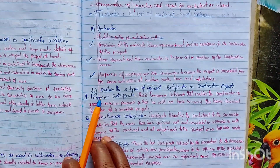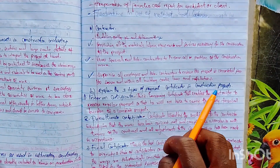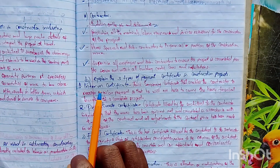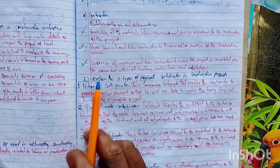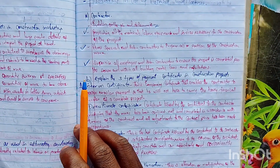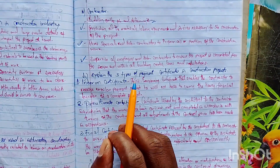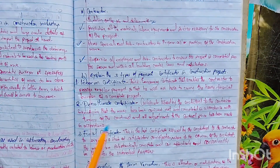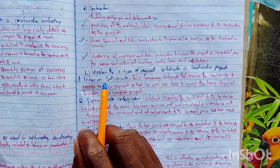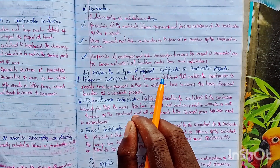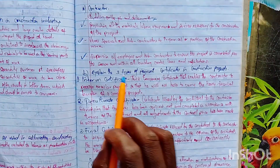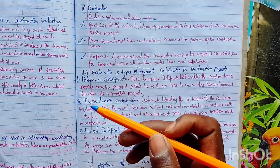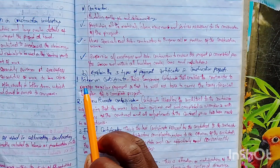Question four B says: explain the three types of payment certificate in construction projects. The three certificates normally given to a contractor by the architect are: the interim certificate, the penultimate certificate, and the final certificate. Sometimes the question will ask you to explain them without naming them, so it is up to you to name and explain each certificate.